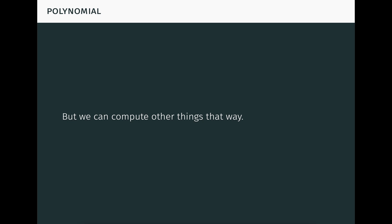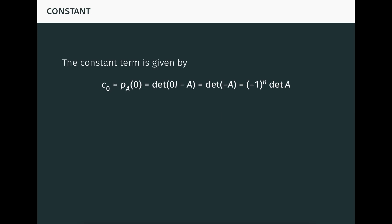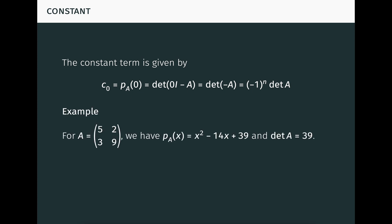However, we can compute other things that way. For example, the constant term of the characteristic polynomial can be obtained by evaluating the polynomial at zero. We can substitute zero for x in the definition of P_A to obtain the determinant of zero I minus A, which is the determinant of minus A, which by multilinearity of the determinant is minus one to the n times the determinant of A. Unlike the equation in our failed proof, this equation is correct.